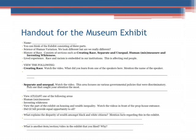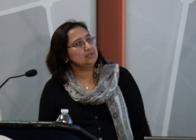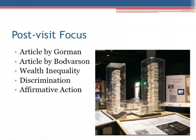This is the wealth inequality part of the exhibit. They were fascinated — one tower represents the wealth of whites, another of Asians, and then blacks and Latinos. They were surprised that blacks had the least amount of wealth, and everybody gravitated toward that part of the exhibit.